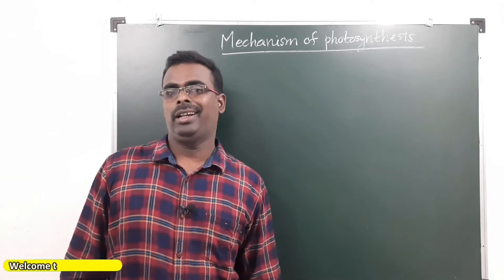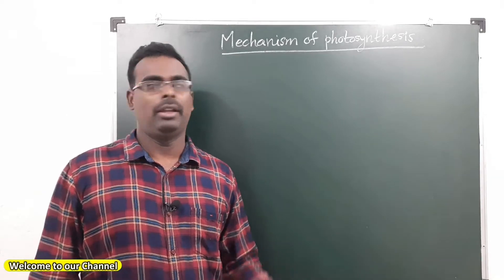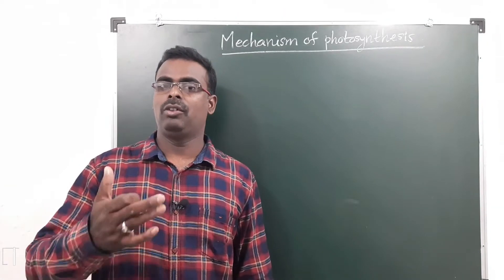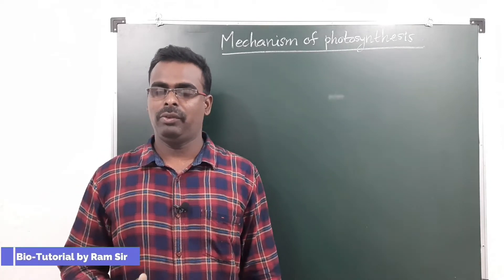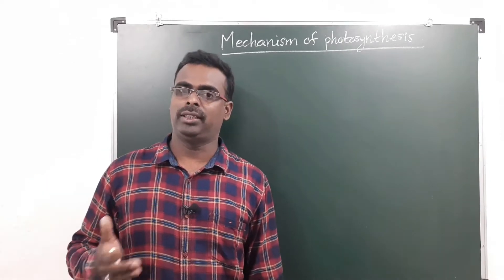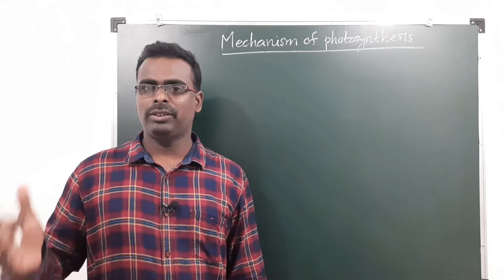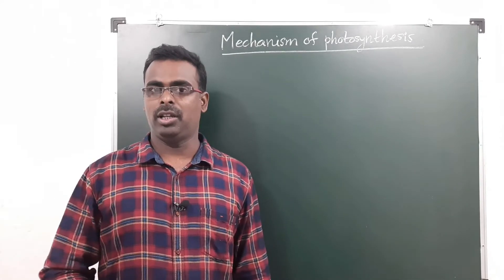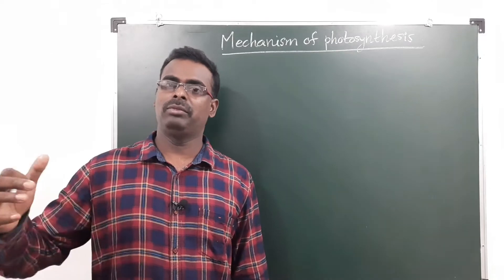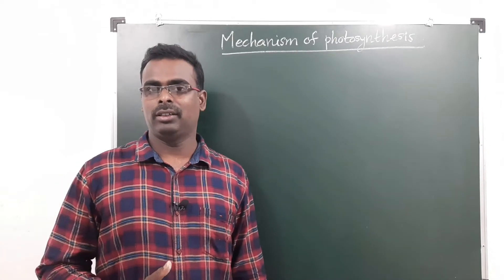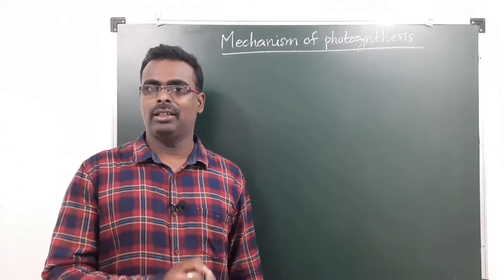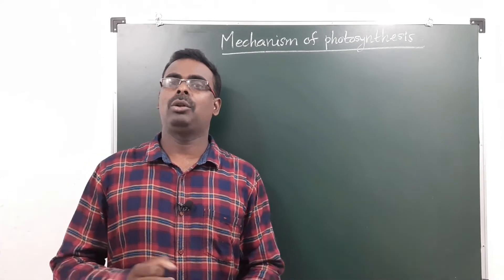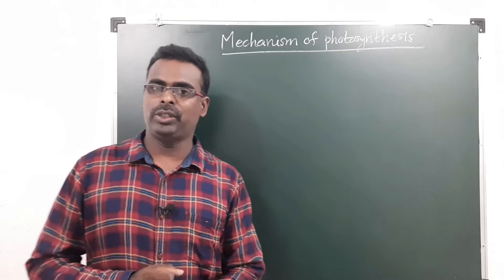Let us study about the mechanism of photosynthesis. Photosynthesis is a process by which green plants produce organic molecules — that means food material — from inorganic raw materials like water and carbon dioxide, with the use of sunlight and chlorophyll.